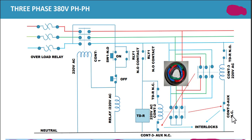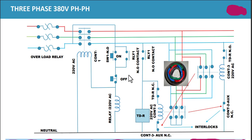Two auxiliary normally closed contacts are used as interlocks: contactor 2's auxiliary contact and contactor 3's auxiliary contact. When contactor 2 is energized, contactor 3's path is broken, and when contactor 3 is energized, contactor 2's path is broken. This ensures that when the motor runs in star connection, the delta connection is disabled, and vice versa. This is a very important line diagram to learn. Thank you for watching.